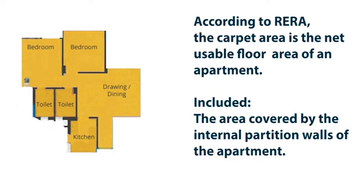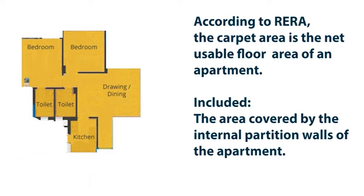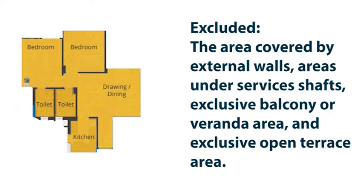Carpet Area: As the name suggests, it is the area that allows us to spread a carpet inside the house wall to wall. According to RERA, the carpet area is the net usable floor area of an apartment, which includes the area covered by the internal partition walls of the apartment, but excludes the area covered by external walls, areas under service shafts, exclusive balcony or veranda area, and exclusive open terrace area.